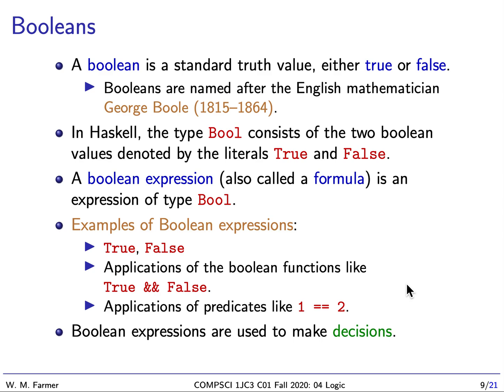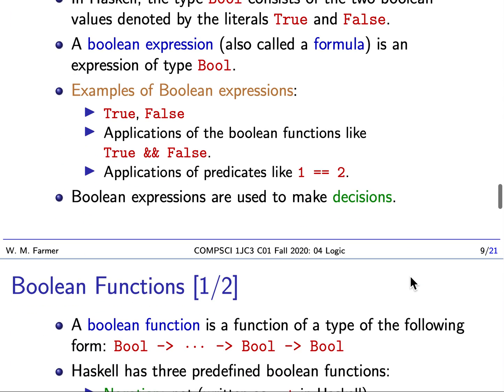If we didn't have a way of making these decisions, we would have to execute all the code in our program every time we ran it. So Boolean expressions are used for making decisions. You evaluate a Boolean expression, and if the expression evaluates to true, you do one thing. If it evaluates to false, you do another thing. Boolean expressions are a central part of programming.